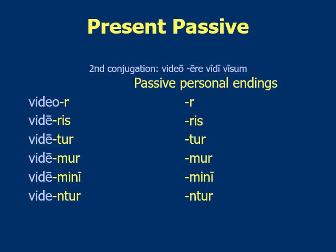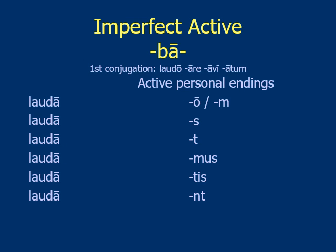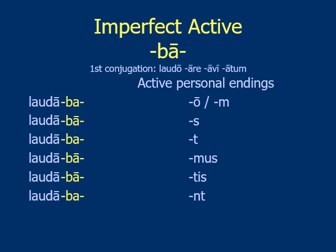For the imperfect in the active voice, first and second conjugations do the same thing. Go to the second principal part, drop off the -re — there's your stem. If it's imperfect tense, you insert -ba- all the way through, and then you add your endings. In this case we use -m instead of -o for first person, so we have laudabam, laudabas, laudabat, laudabamus, laudabatis, laudabant. Those are the active endings.